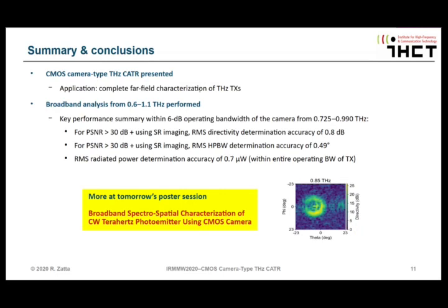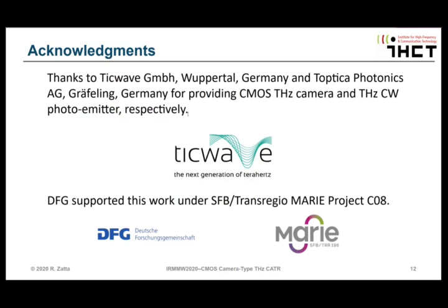Let me finally summarize and conclude. We have presented the concept of CMOS camera type Terahertz CATR for complete far-field characterization of Terahertz transceivers. We performed a broadband analysis from 0.6 to 1.1 terahertz. The RMS directivity determination accuracy is 0.8 dB, the half-power beam width was determined within an accuracy of 0.49 degrees, and the radiated power within an RMS accuracy of 0.7 microwatt. More can be seen at tomorrow's poster session, where colleague Vishal Yagta presents the broadband spectrospatial characterization of a CW-Terahertz photomixer using the CMOS camera. Thanks to our sponsors and thanks for your attention.